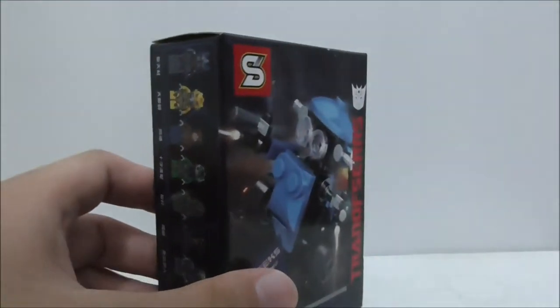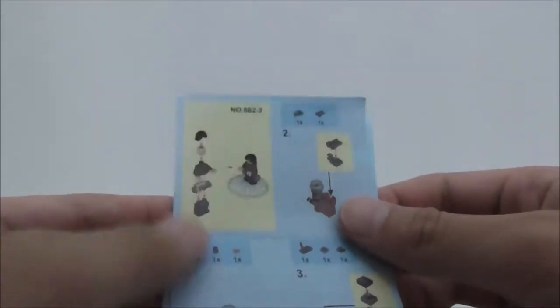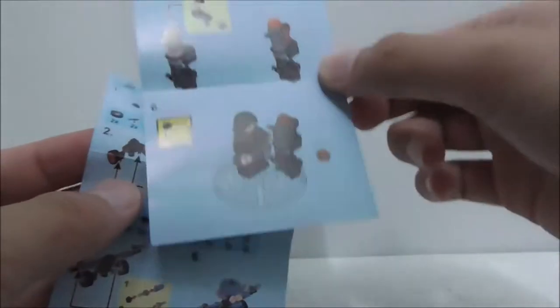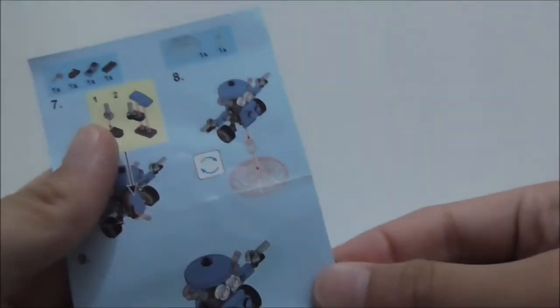These are the instructions here. They're just a pretty simple sheet of instructions because there's no combined build or anything like that. This one is the Squeaks one. That's it for the instructions.